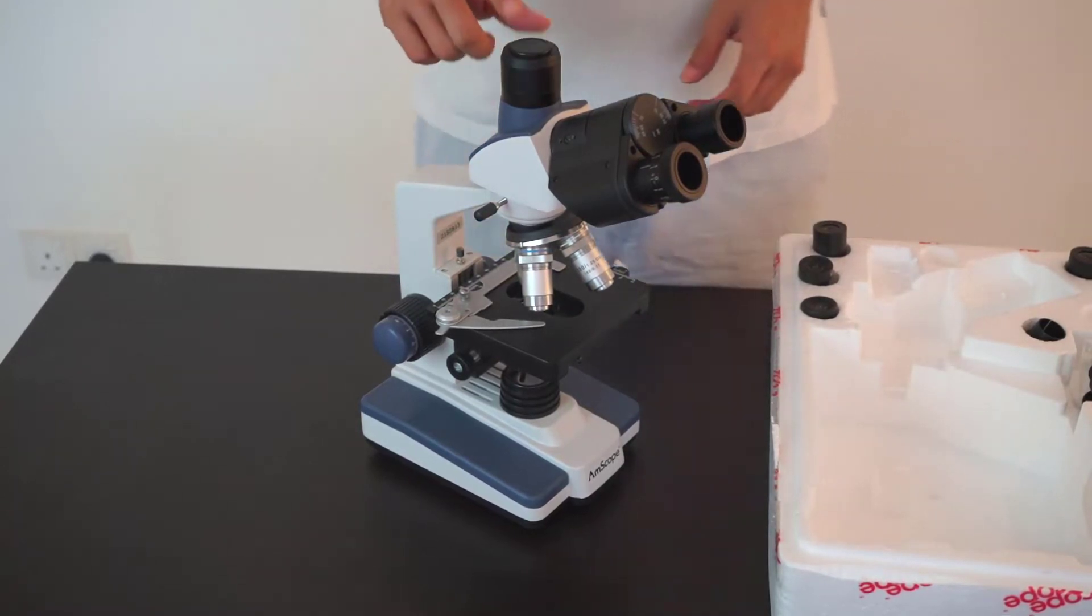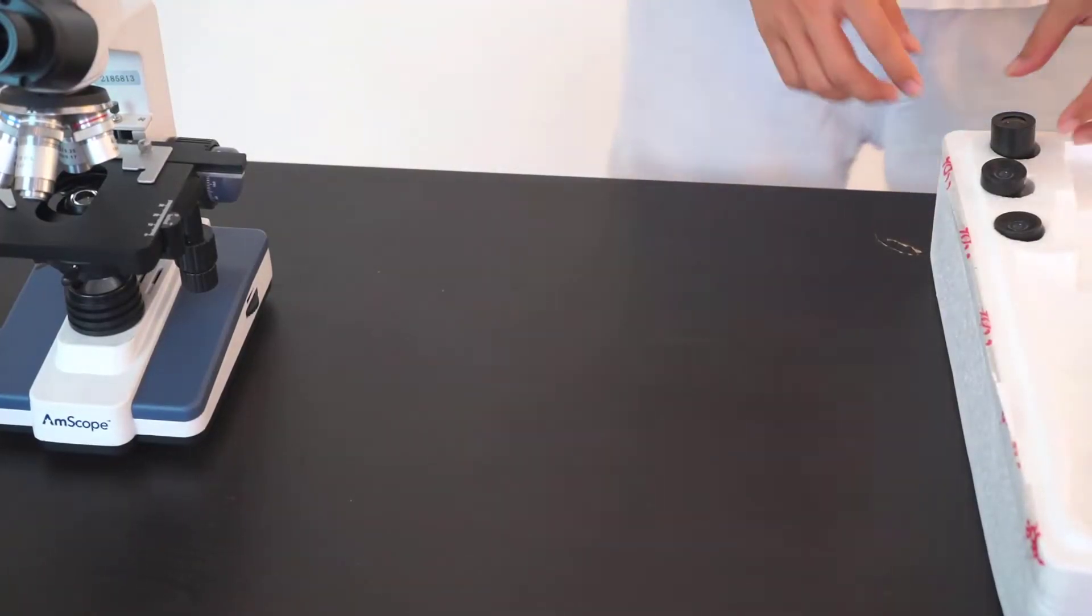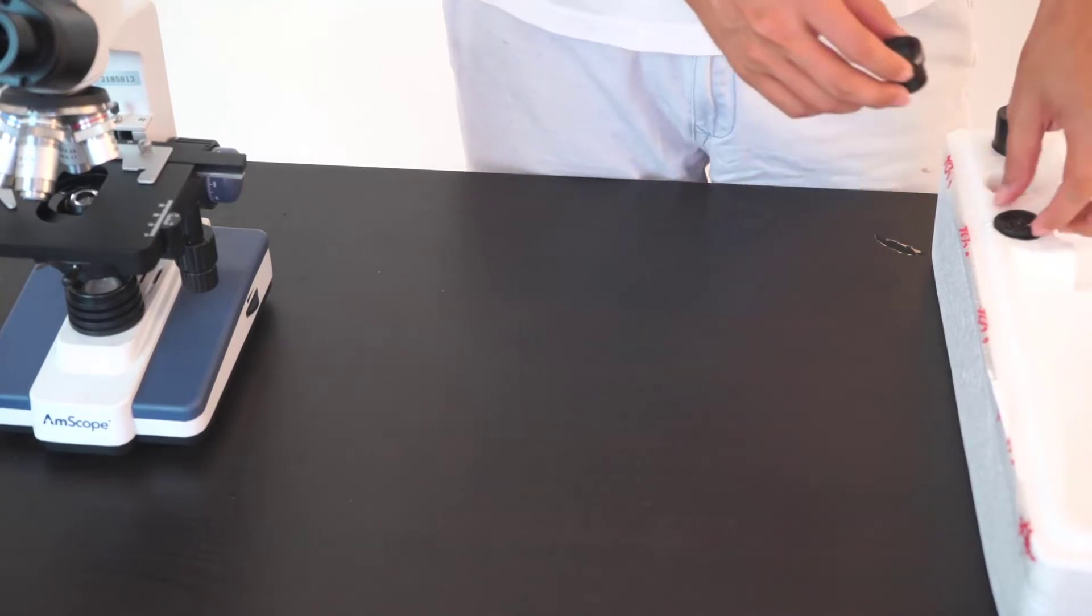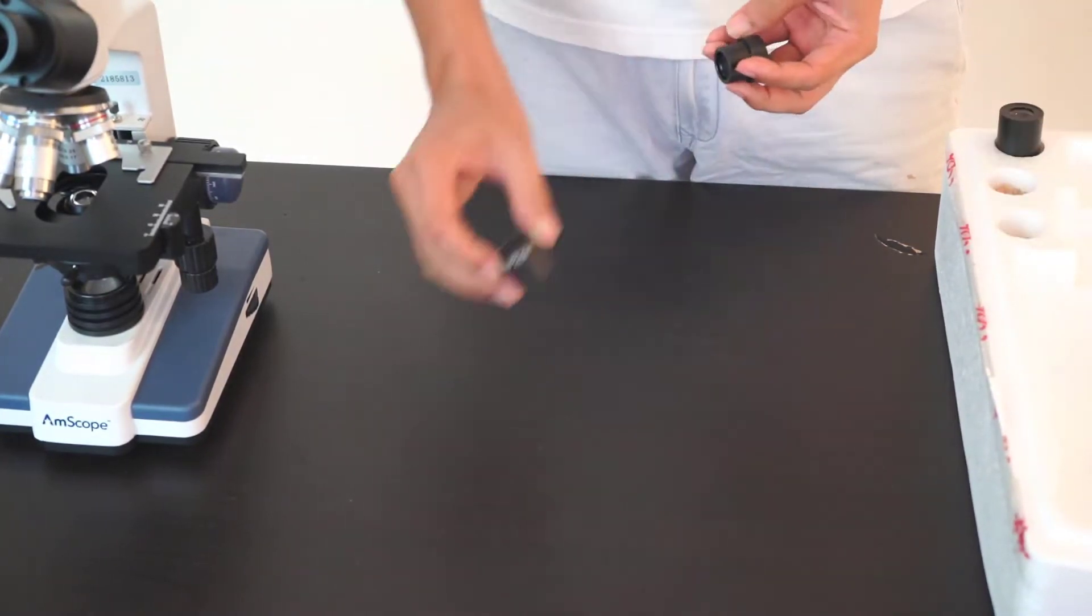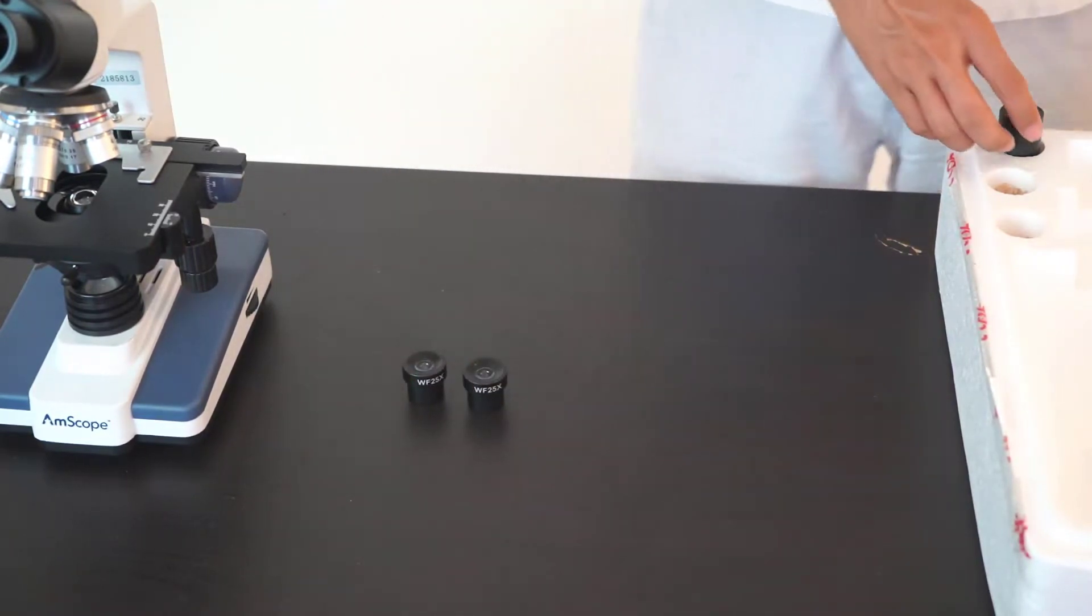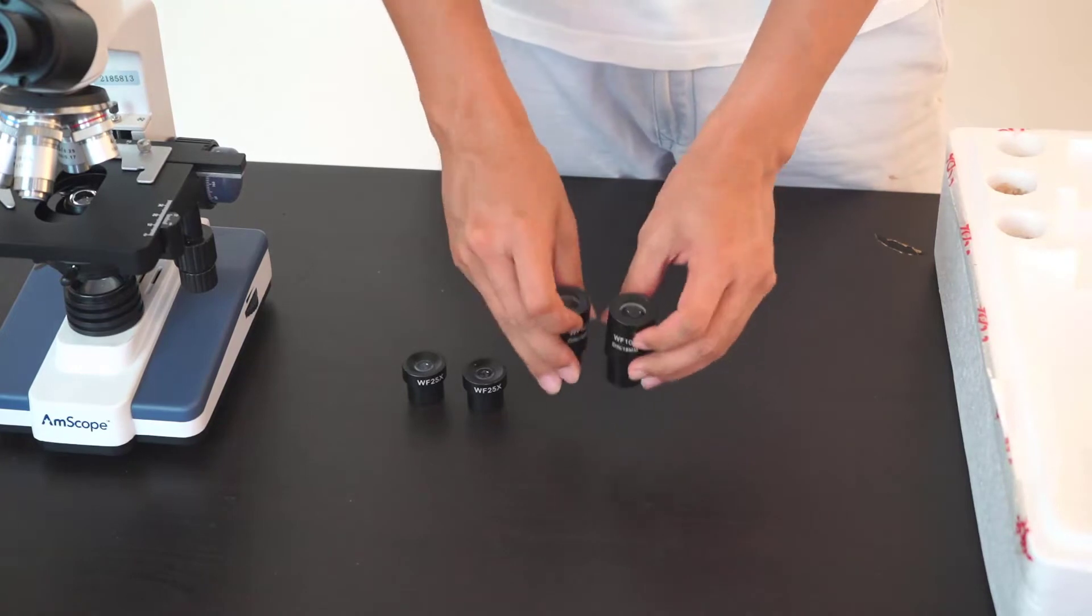This piece comes with a trinocular port. The T120 series comes with different eyepieces - you have a set of 25 times eyepiece and a pair of 10 times eyepiece.